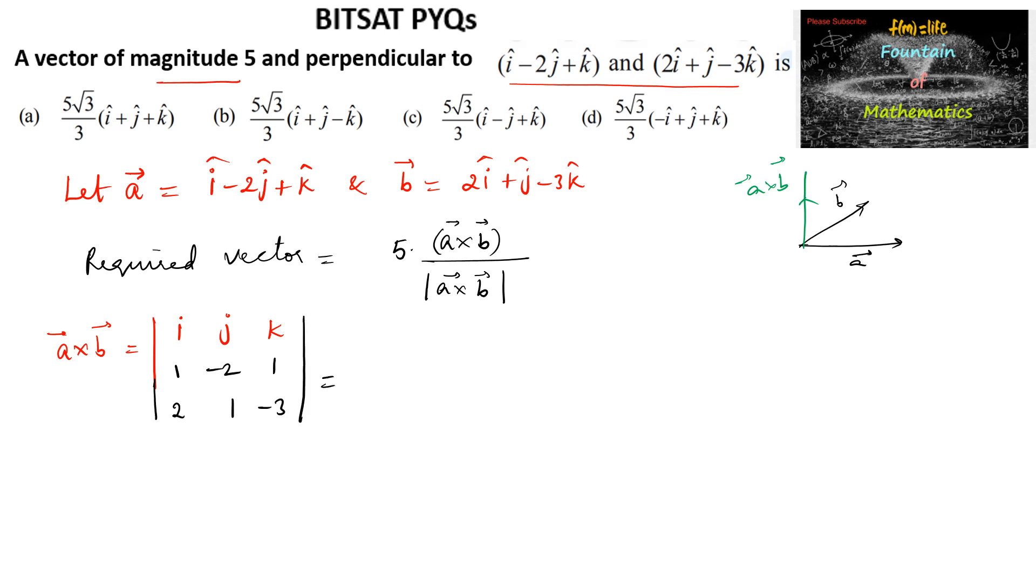Let us simplify. We can write i times minus 2 into minus 3 that is 6 minus 1, minus j times minus 3 minus 2, and again plus k times 1 minus minus that is plus 4.